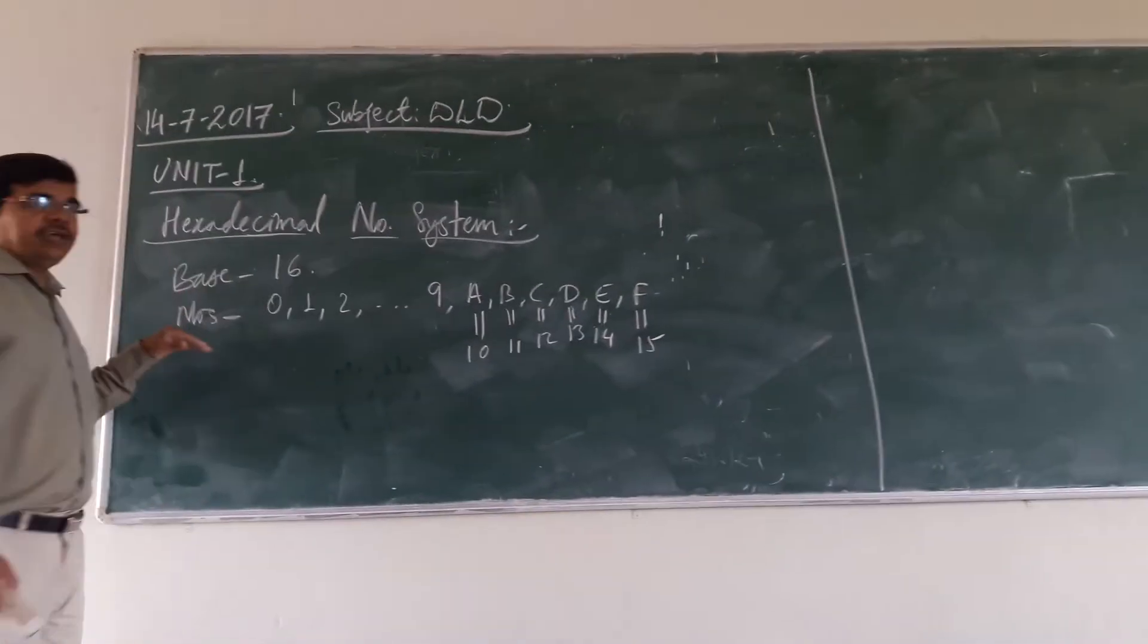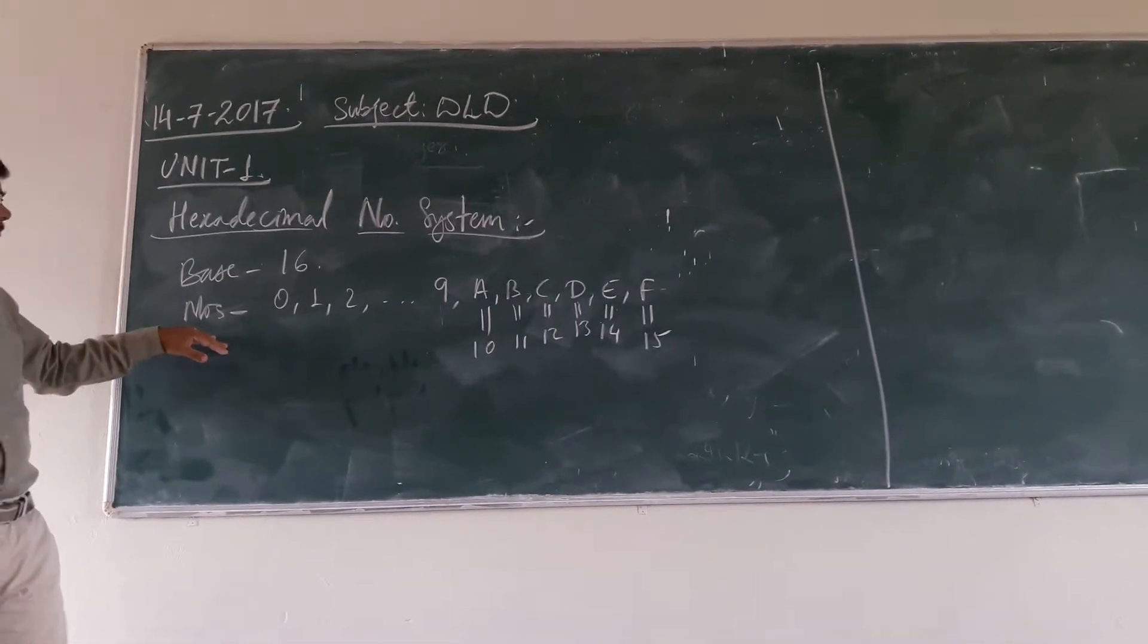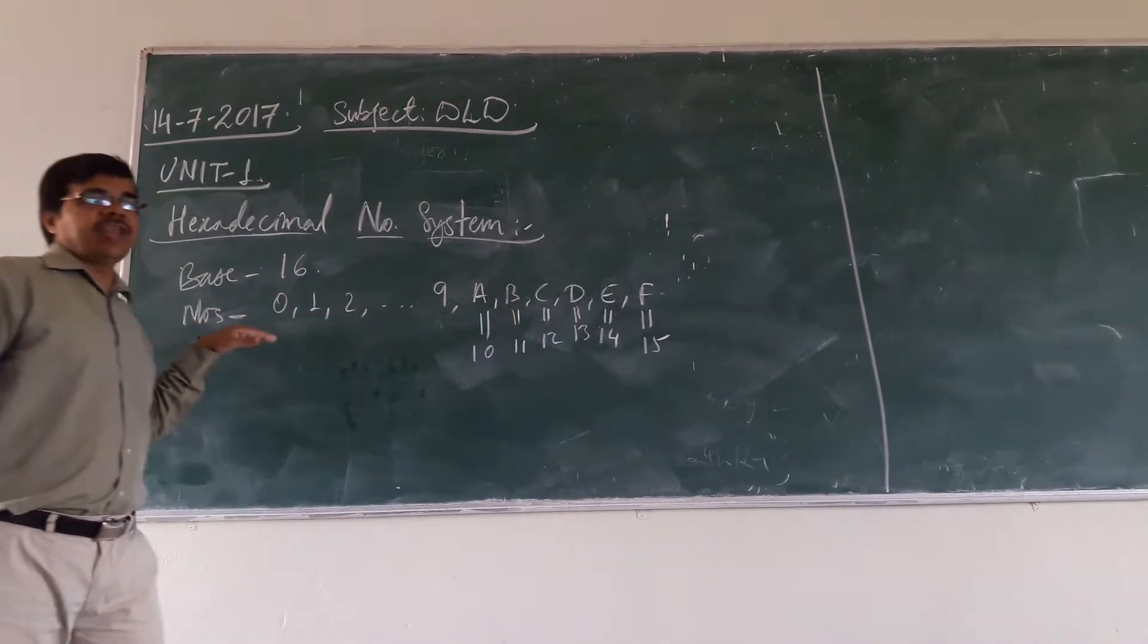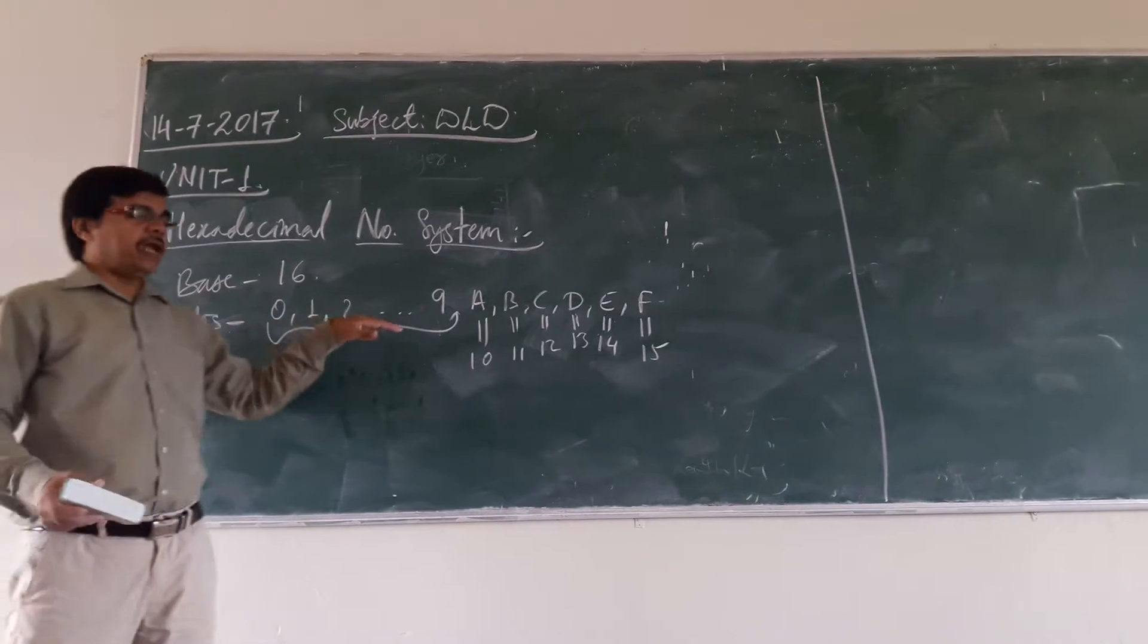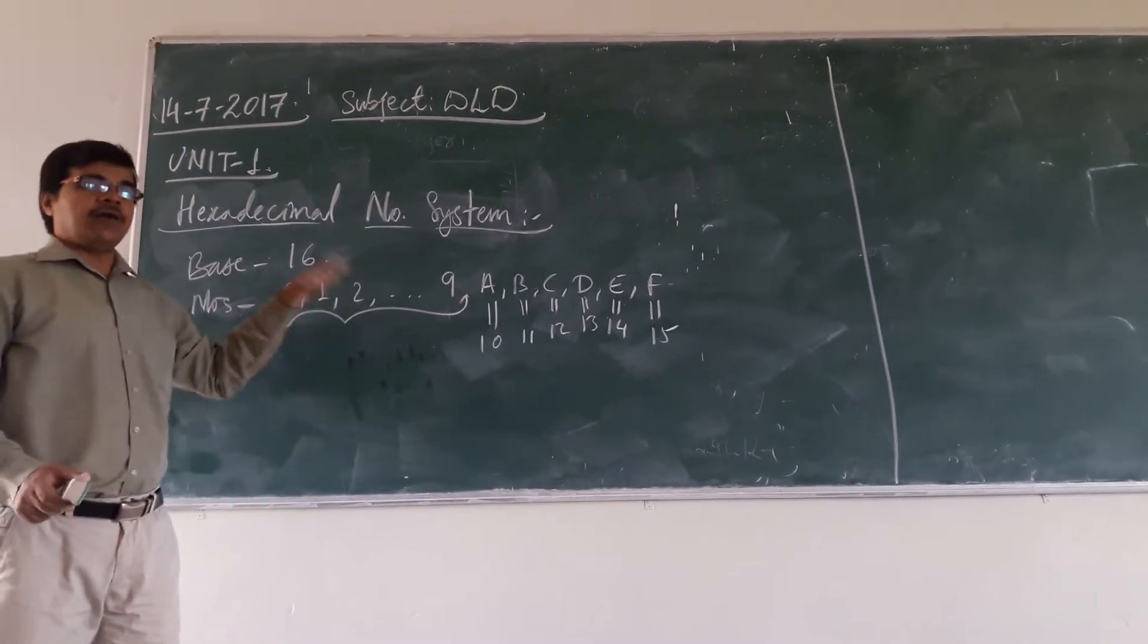The different numbers that you are having in the hexadecimal number system are all the decimal numbers you will have. That is from 0 to 9, all the numbers you will have. Apart from that,